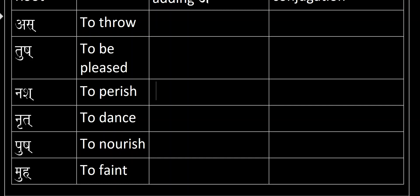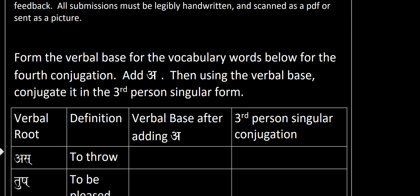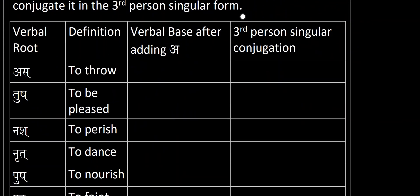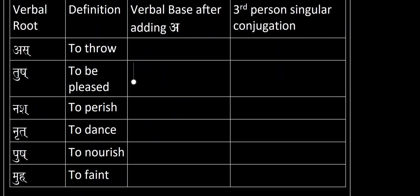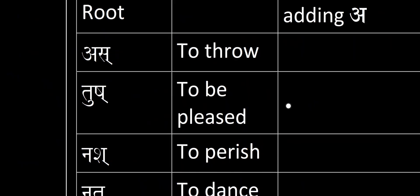We have 'nrit' to dance, 'push' to nourish — we already did that one — and 'muh' to faint. Since the fourth conjugation is pretty straightforward, there are only a few things I want to show you: how to add the half letters to the 'ya', and then I'll leave you to do the rest.